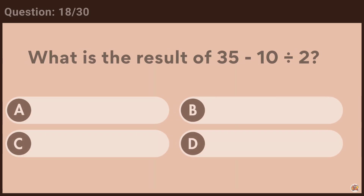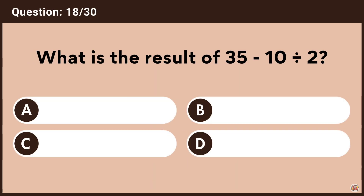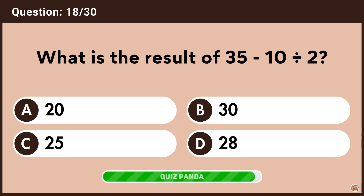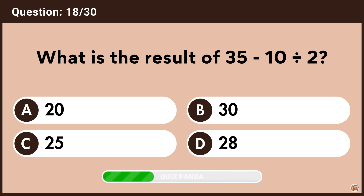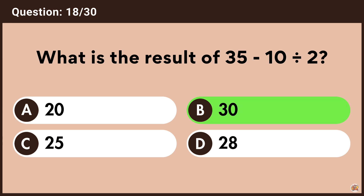What is the result of 35 minus 10 divided by 2? Answer B, 30.